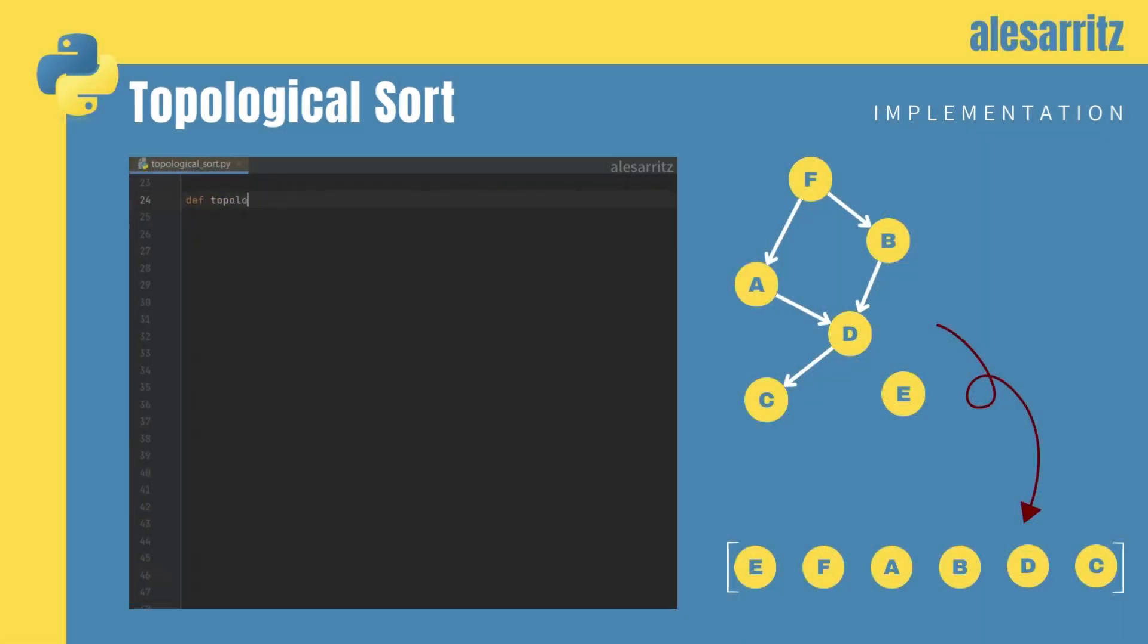Let's now start the implementation of our beloved topological sort. First, we create the empty queues we need. Then, with a for loop, we count the incoming edges for each node.